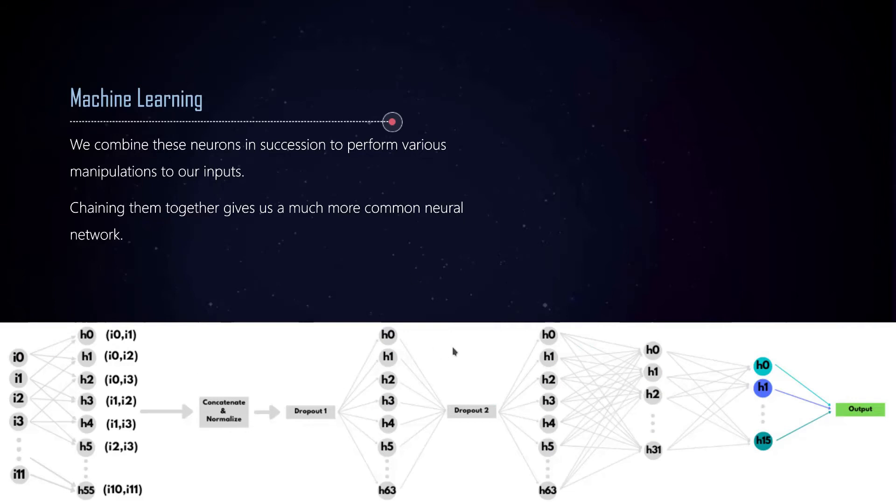In general, if we have the values for the weights and biases as random, it would just give us a random value at the output. But we need to find the perfect values for those weight and bias multiplication constants to get the desired output. The way we do this is using a method called gradient descent.